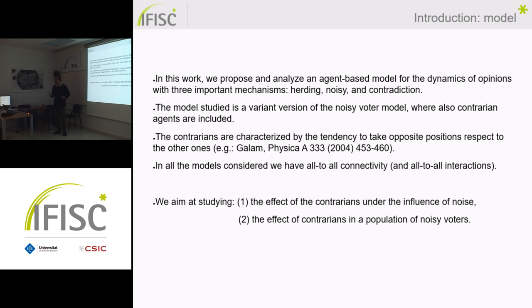We propose an agent-based model for the study of opinion dynamics where there are three important mechanisms: the herding behavior, the emulation behavior typical of the noisy voter model; the inclusion of noise, which represents mathematically the free will; and contradiction, because contrarian agents are agents who vote against the non-contrarians — the classical traditional voters — contradicting the majority opinion. It is a variant of the noisy voter model where contrarian agents are included.